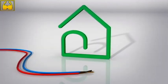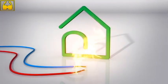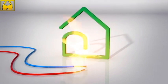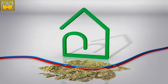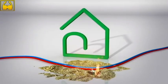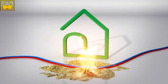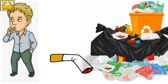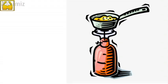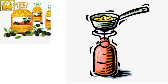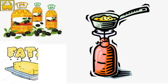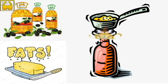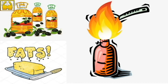Electrical equipment: faulty and damaged electrical equipment can cause ignitions and sparks, which may lead to fires with a source of fuel nearby. Smoking materials: in particular, carelessly discarded smoking materials such as cigarette butts and matches lead to fire accidents. Cooking appliances: cooking oils, fats and pans left unattended on fire can cause fire accidents.